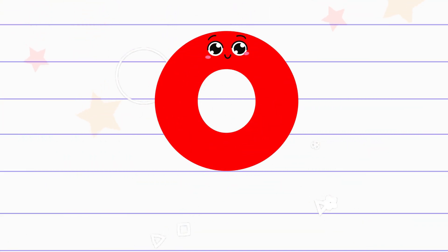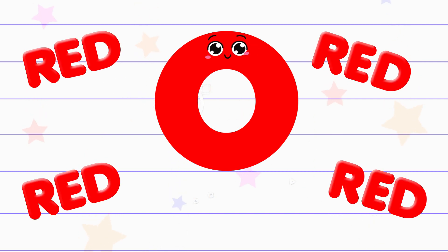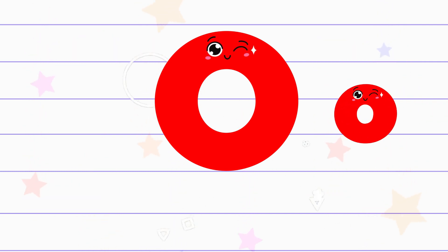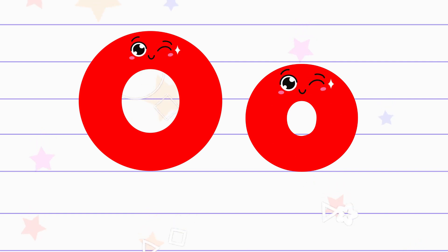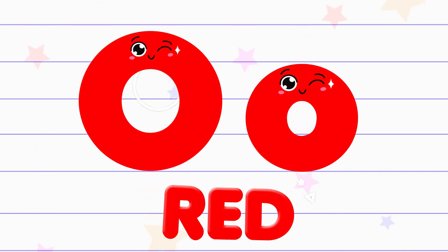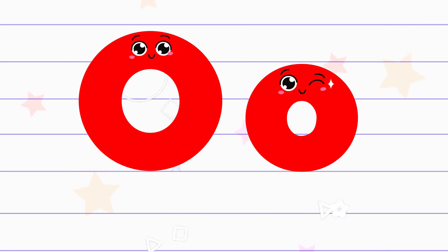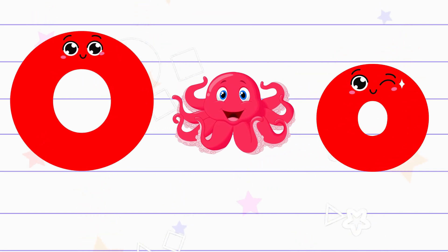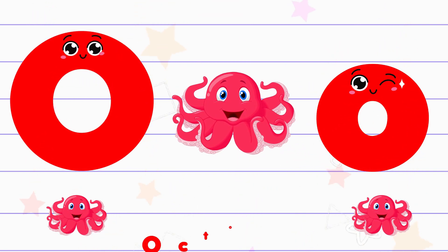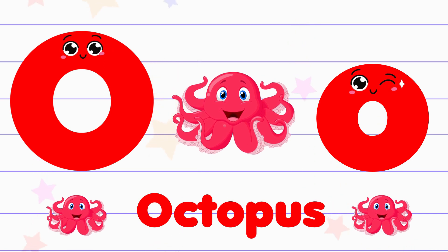O. The color of the letter O is red. The sound of the letter O is o. O is for octopus.